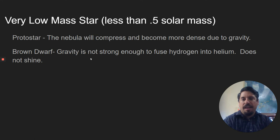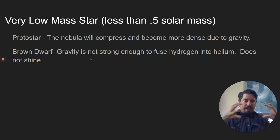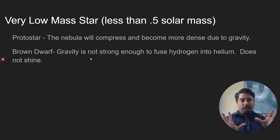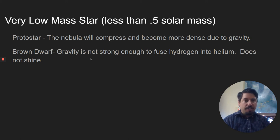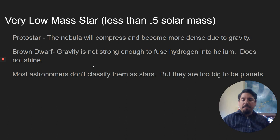For these half-solar-mass objects, the protostar collapses further and forms what is known as a brown dwarf. A brown dwarf is an object where gravity is not strong enough to fuse hydrogen into helium. The pressure is not squishing hydrogen atoms into helium — it's not strong enough. So there is no fusion, no release of energy. When you convert hydrogen to helium, a lot of energy is released, but because that energy is not being released, brown dwarfs do not shine. They're not fusing hydrogen to helium. They're just these giant dark objects — like suns, but not shining like stars.